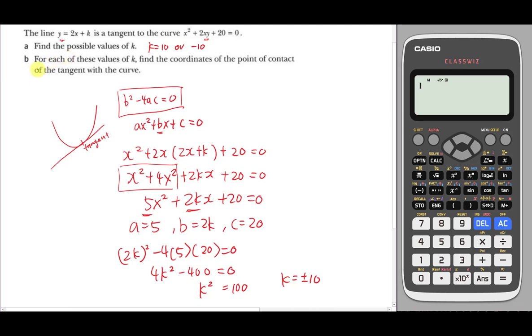Part b asks for each of these values of k, find the coordinates of the point where the tangent contacts the curve. So the question is asking what is this coordinate? What is this coordinate here?